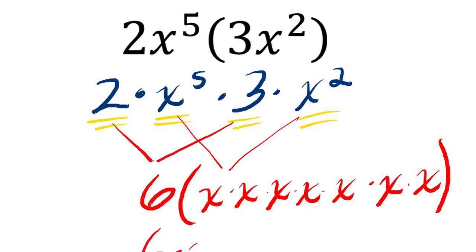But x to the fifth times x squared, right, if you think about what's going on here, we have x to the fifth is five x's. And x to the second, we're multiplying that by x to the second, is two x's.